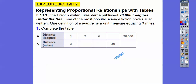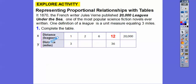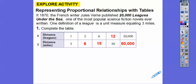One times three is three, two times three is six, and so on. What times three equals 36? Well, 12 times three — so this would have to be 12 leagues to give us 36 miles. Distance in leagues, distance in miles. Two times three is six, six times three is 18, twelve times three is 36, and 20 times three is 60. So 20,000 times three is 60,000.